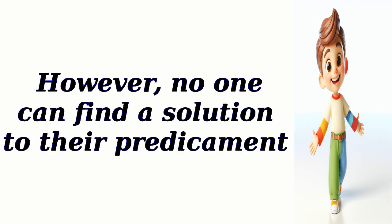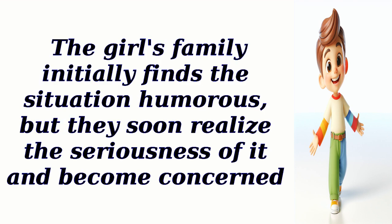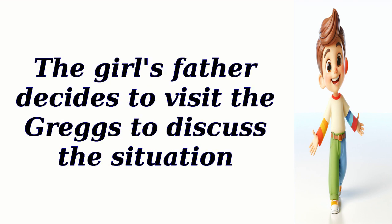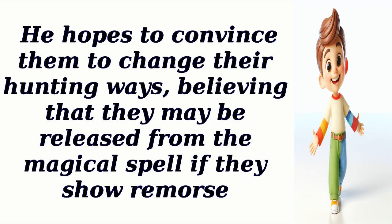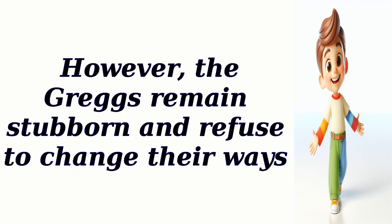However, no one can find a solution to their predicament. The girl's family initially finds the situation humorous, but they soon realize the seriousness of it and become concerned. The girl's father decides to visit the Greggs to discuss the situation. He hopes to convince them to change their hunting ways, believing that they may be released from the magical spell if they show remorse. However, the Greggs remain stubborn and refuse to change their ways.